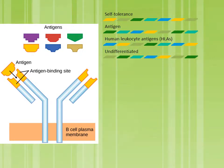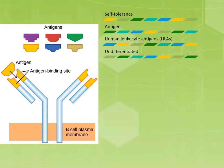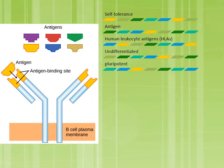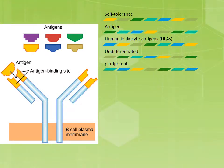Undifferentiated cells are the immature stem cells produced in the bone marrow. Stem cells have more than one potential outcome, identifying them as pluripotent cells.